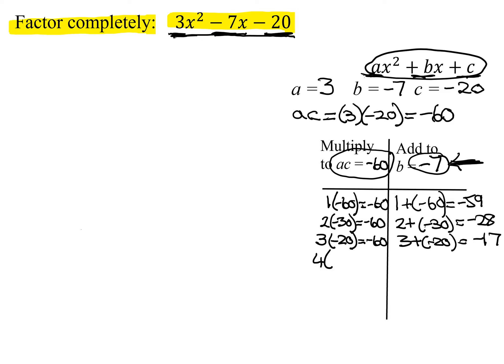Does four go into negative 60? Yes, negative 15 times. And what is four plus a negative 15? That's a negative 11. Still not the number I want. Does five go into negative 60? Yes, negative 12 times. And what is five plus a negative 12? It is negative 7. That is what I'm looking for. So these are the two numbers I need.